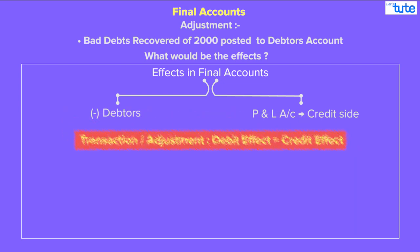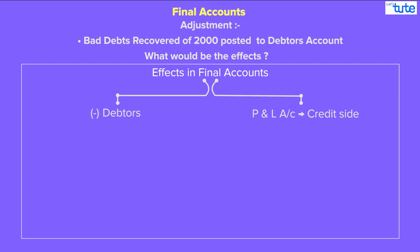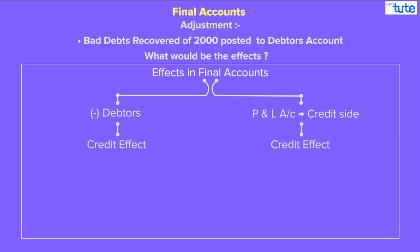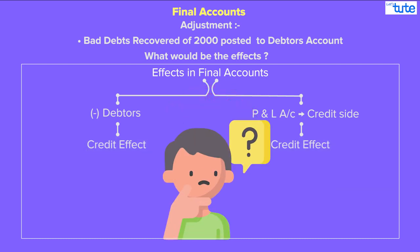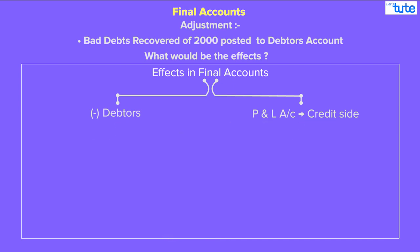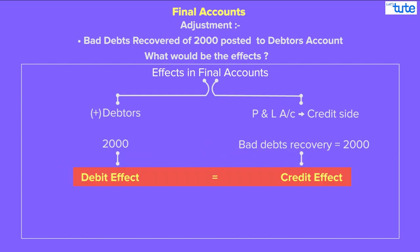Let's check. We know that we need to give equal debit and credit effect for any transaction or adjustment. When we say less from debtor's, it means we are giving a credit effect, as debtor's has a debit balance and we are deducting an amount from it. And profit and loss account credit side is again a credit effect. So here, both effects are credit, which is wrong and definitely your balance sheet will not tally. The correct effects are: add 2,000 to debtor's, and profit and loss account credit side as bad debts recovery 2,000 — which gives you equal debit and credit effect.